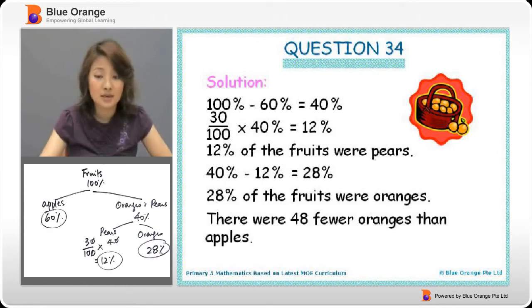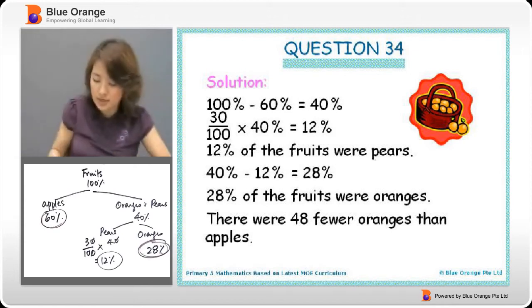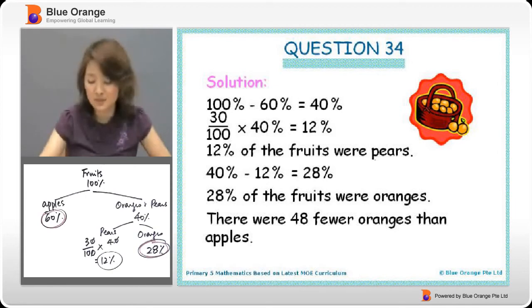And we are told that there were 48 fewer oranges than apples. We are comparing oranges and apples. Apples is 60%, oranges 28%. So 60% minus 28% gives you 32%.